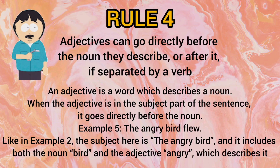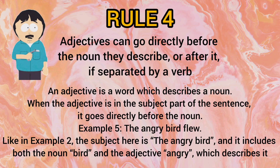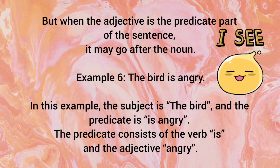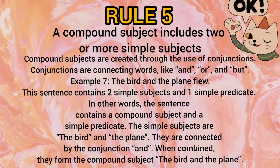Rule number 4: Adjectives can go directly before the noun they describe, or after it if separated by a verb — this is very important. An adjective is a word which describes a noun. When the adjective is in the subject part of a sentence, it goes directly before the noun, for example 'The angry bird flew,' where 'angry' describes 'bird.' When the adjective is in the predicate part, it may go after the noun, for example 'The bird is angry.'